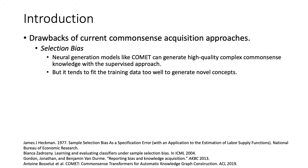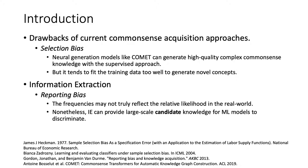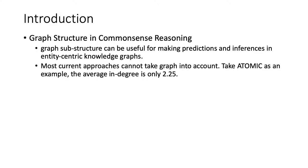Neural models tend to fit the training data too well to generate novel concepts. For information extraction-based methods, although there may be reporting bias, where the frequencies of text may not truly reflect the relative likelihood in the real world, we can use information extracted from text as candidate knowledge and use a neural model to classify or discriminate it. We will introduce this idea later.